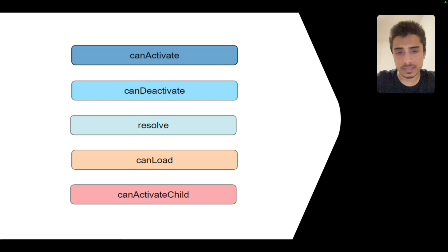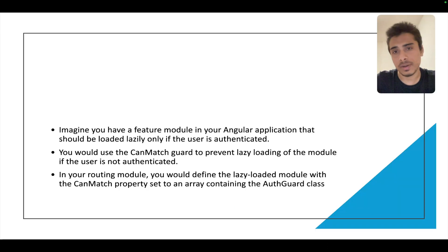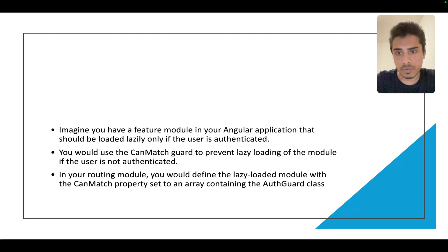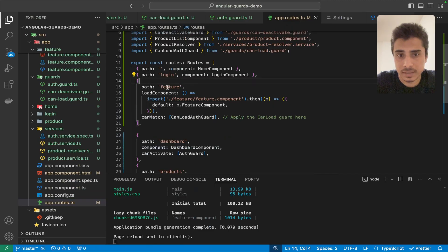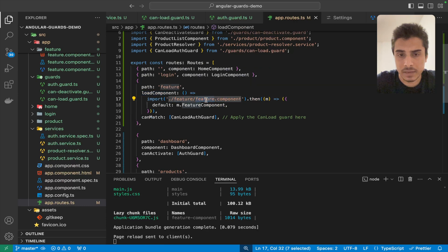The next type of guard is CanLoad, which helps implement lazy loading more efficiently. Imagine you have an Angular component that you want to lazy load, but additionally you want to put a guard condition on top of it — for example, only lazy loading a component if the user is authenticated. In that case you can use a CanLoad guard to prevent the lazy loading of that module. In our case, we're making the Feature component lazy loaded using the import syntax — the component only loads when it's invoked via router navigation.